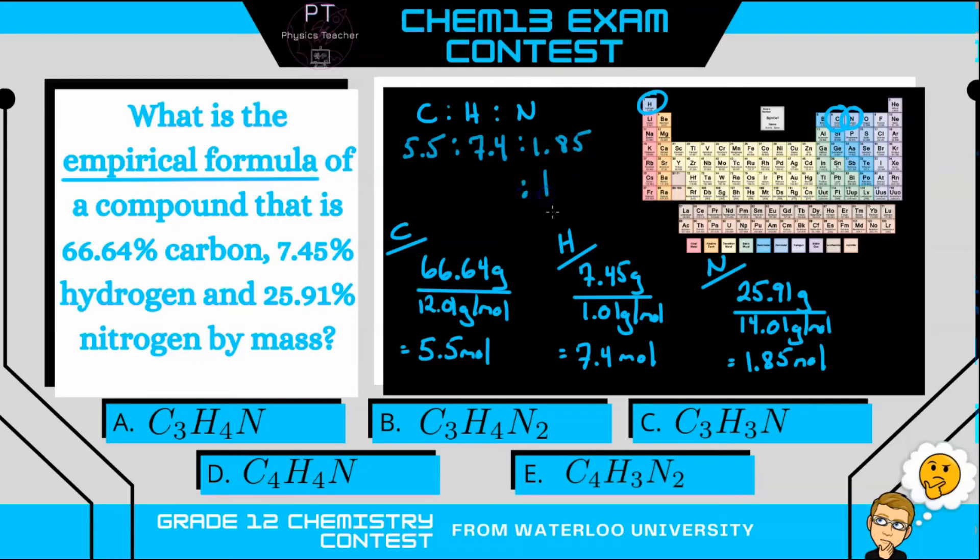When you do that, you divide 7.4 by 1.85, you get four. And when you divide 5.5 by 1.85, you get three. So our ratio then is 3:4:1, and our empirical formula is then C3H4N1, or our answer is A.